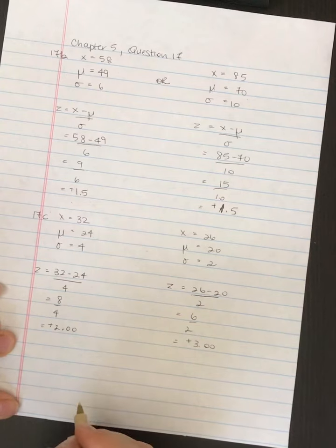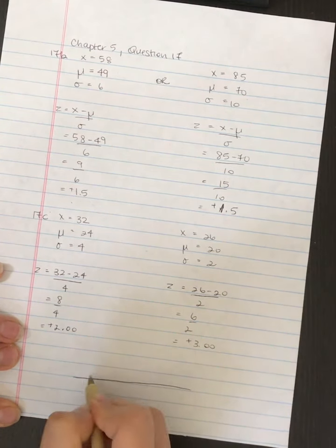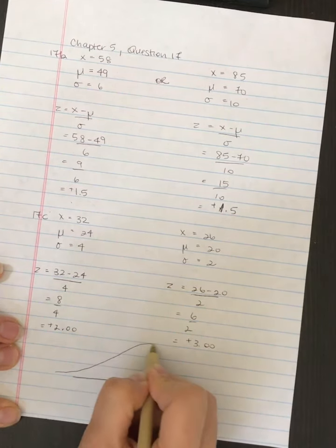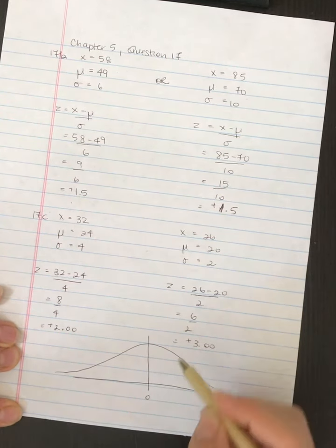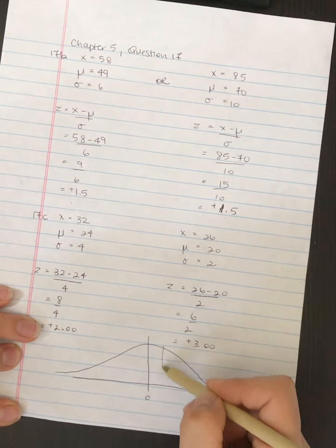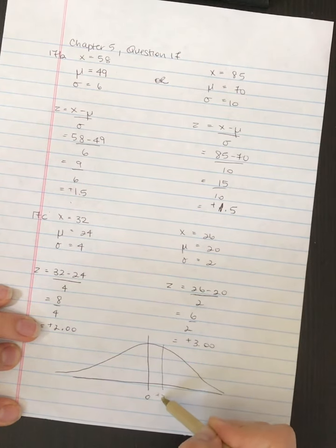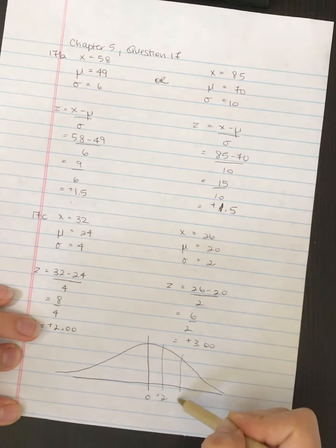If we were to plot that on the normal curve, and I always tell my students they should take the time to draw it out and visualize where things are. So that's where a z-score of 0 is. This first score is here, and it's plus 2, and the other is over here, plus 3.